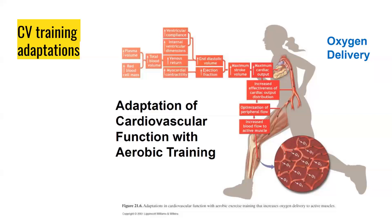Last week we talked about the different cardiovascular training adaptations through this figure. These are all the different adaptations of cardiovascular function with aerobic training. With aerobic training, there is an increase in stroke volume, an increase in cardiac output, and thus an increased effectiveness of cardiac output distribution, an optimization of peripheral flow, increased blood flow to the active muscle, greater oxygen delivery, and improved oxygen delivery to our working muscles for continued aerobic exercise and training.